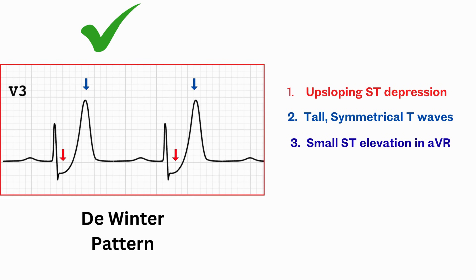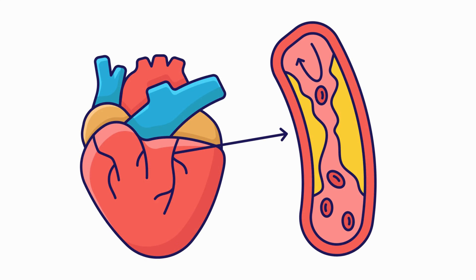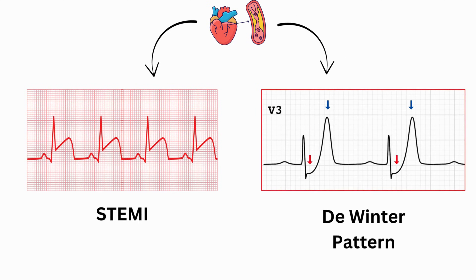So why is that? The same artery — the LAD — is getting blocked. So why are we seeing two different ECG patterns? Think about it: same artery, same territory, but two different patterns.